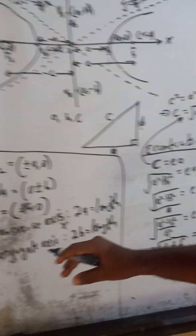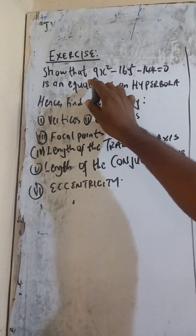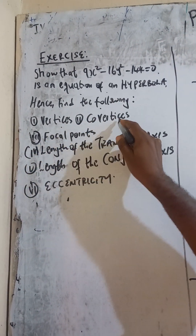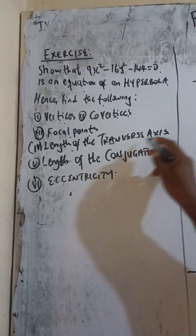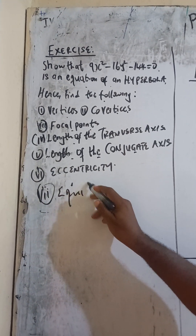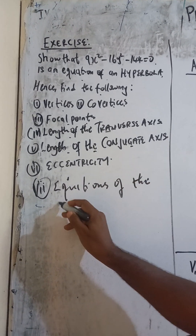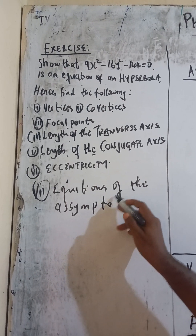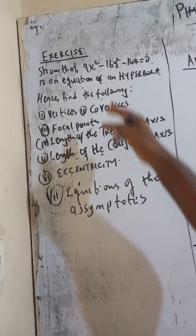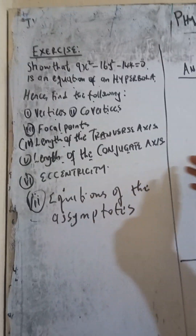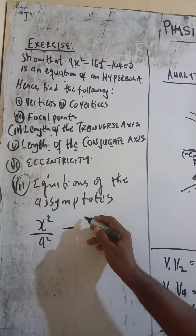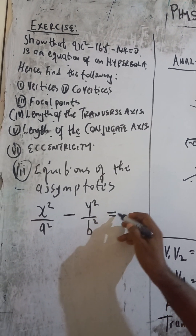We are going to use these formulas to solve the exercise. The expression we have here is an equation of a hyperbola. Find the following: vertices, co-vertices, focal points, length of the transverse axis, length of the conjugate axis, eccentricity, and the equations of the asymptotes. The standard equation of a hyperbola whose transverse axis is along the X-axis is: x squared over a squared minus y squared over b squared equals 1.